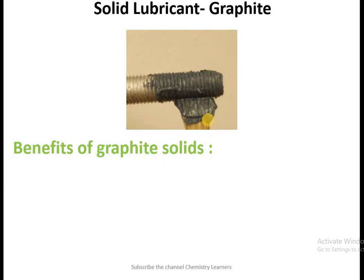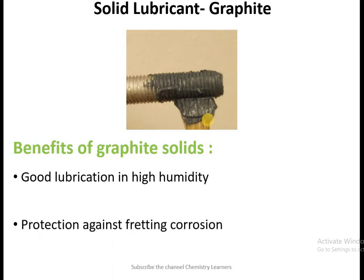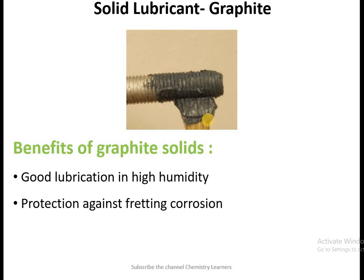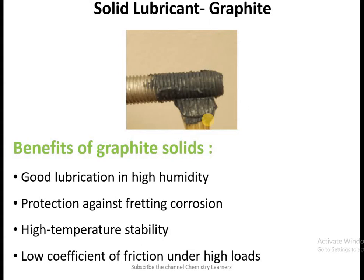The benefits of graphite are: it has good lubrication in high humidity, it provides protection against fretting corrosion, it shows good stability at high temperature, and a low coefficient of friction under high loads. When there are high loads, this type of graphite lubricant is used.